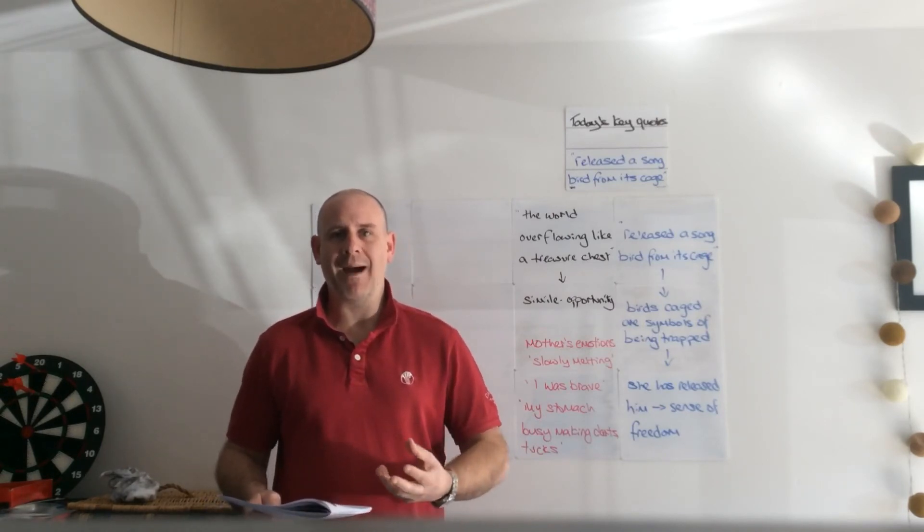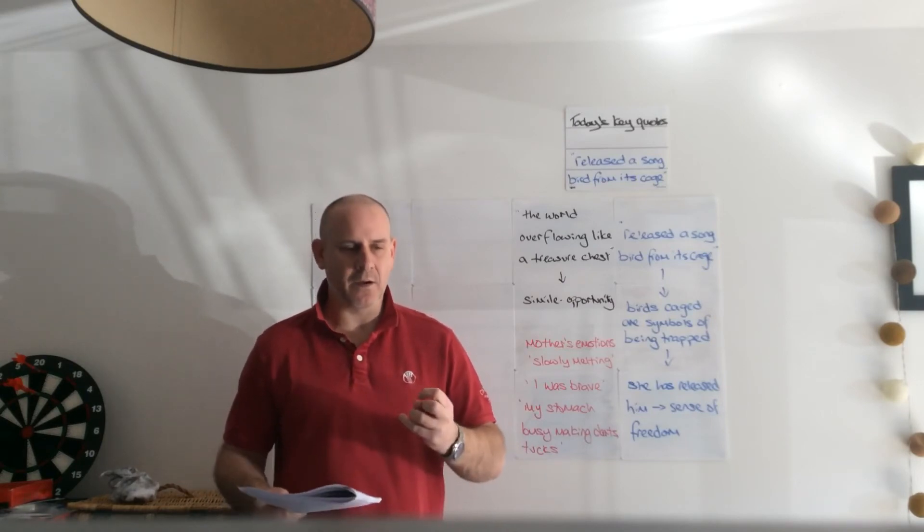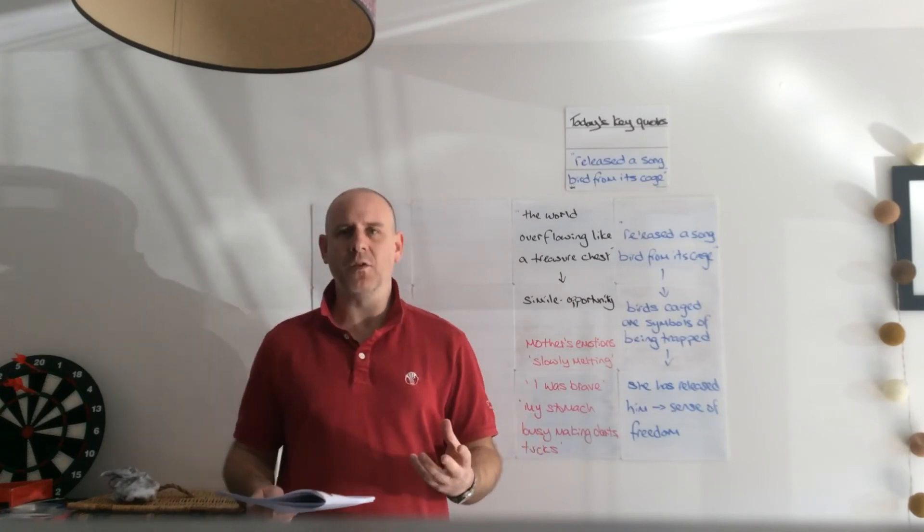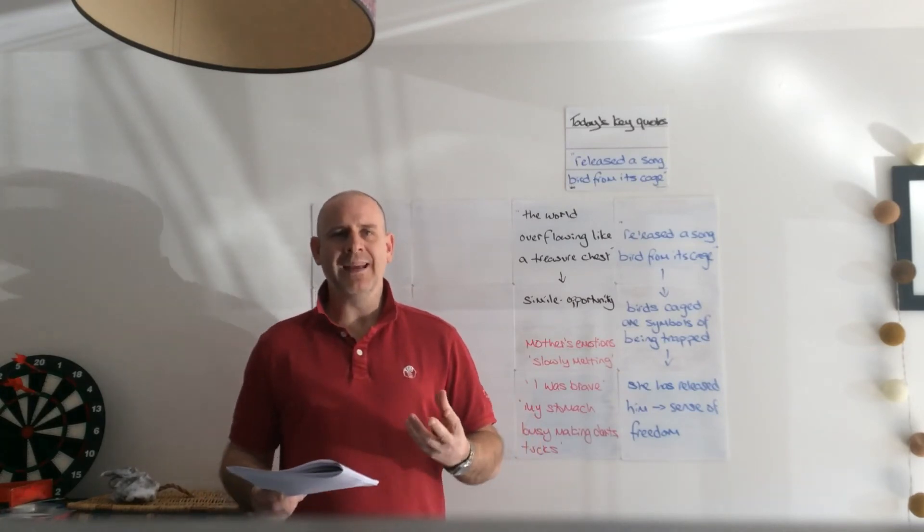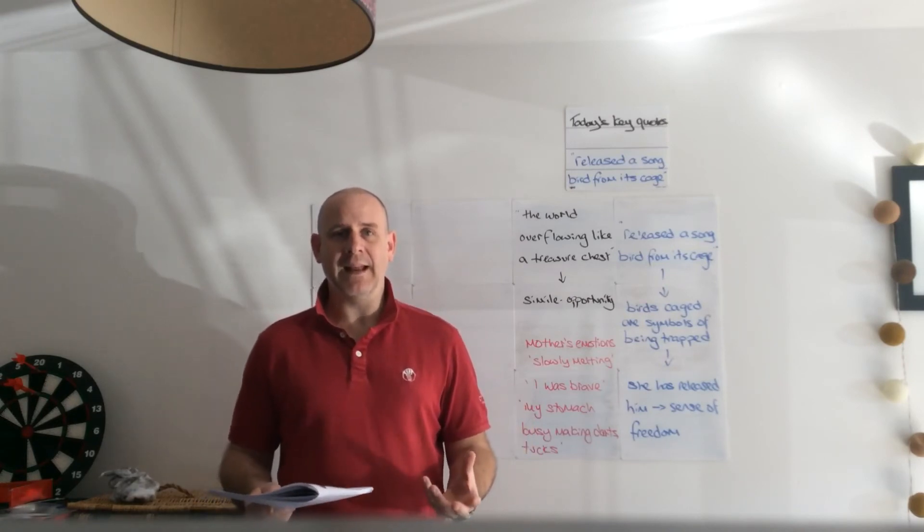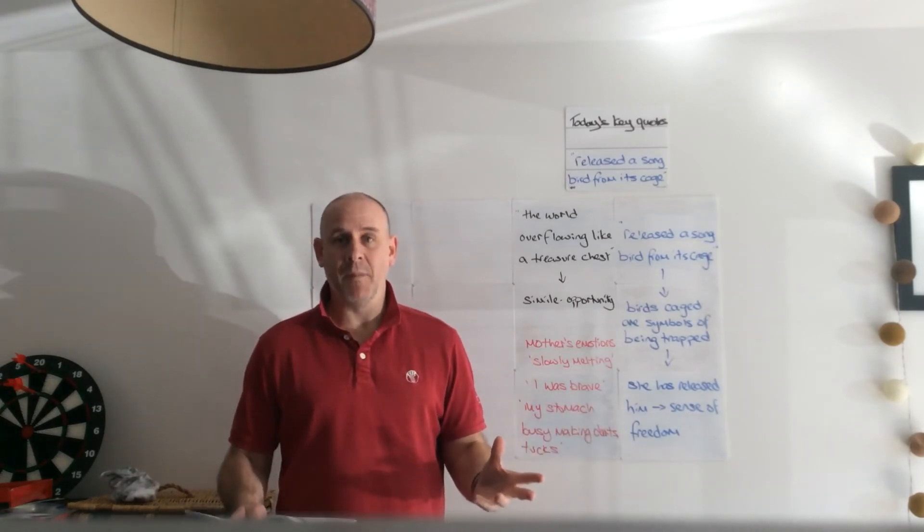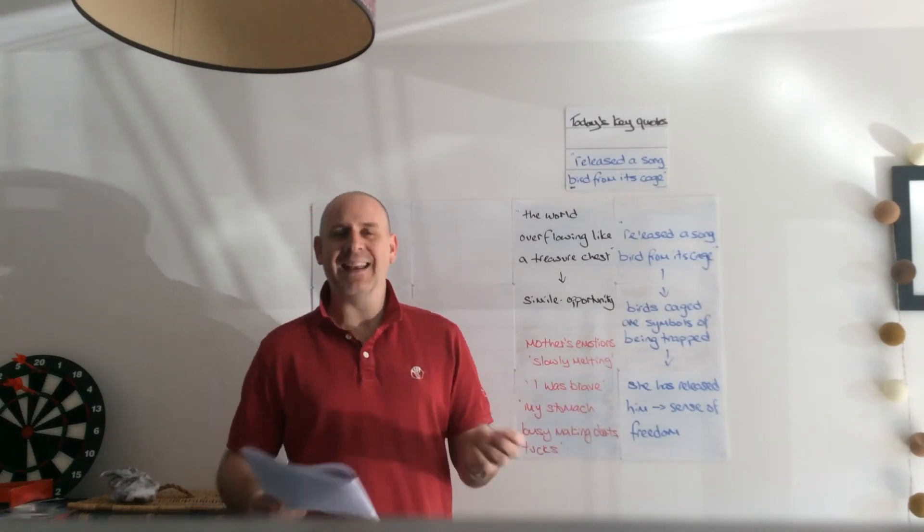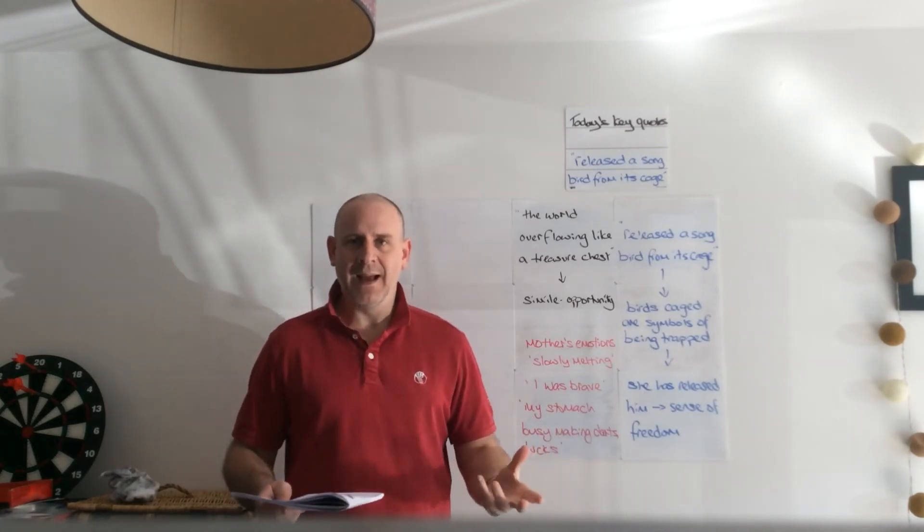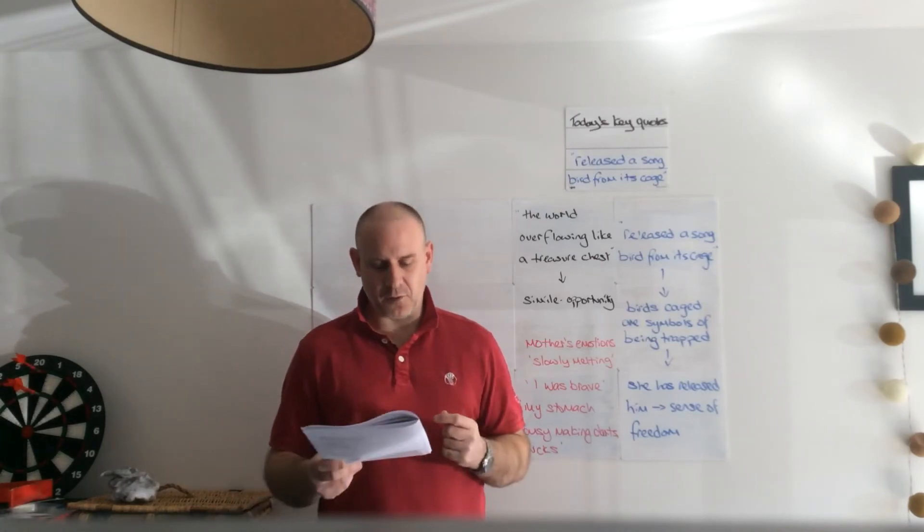The songbird is traditionally a symbol of bringing joy. And actually the army's role of course is to bring about peace, to bring about help to nations and people who really really need it. So again it's that sense of pride. The son is the songbird. He's off to do good in the world, he's off to help people, he's off to bring about peace in another part of the world. And so she's released him, she's given him his freedom. And again it's that juxtaposition between pride and worry. She'll always be worried, but she had to do it. She had to let him have his freedom.